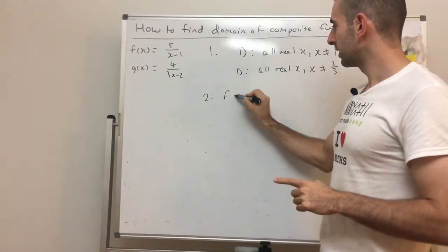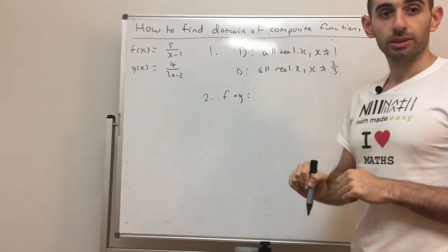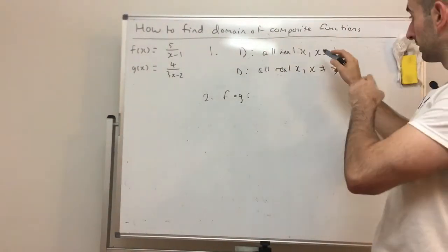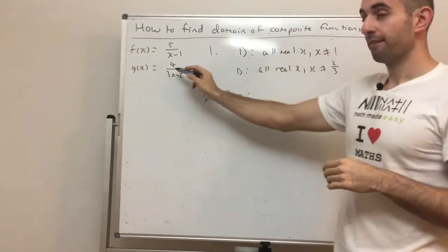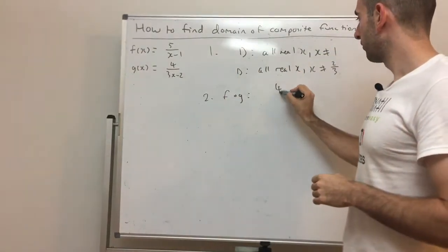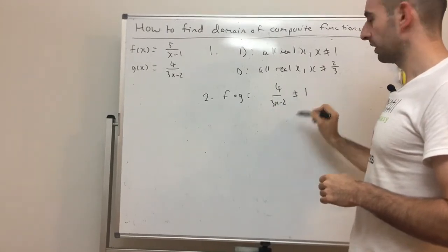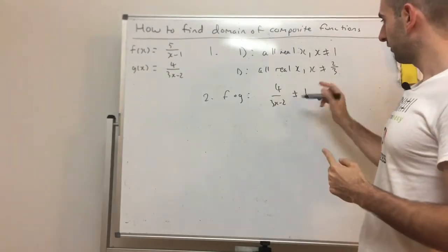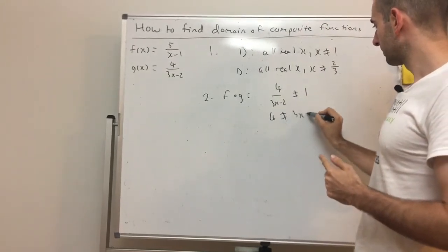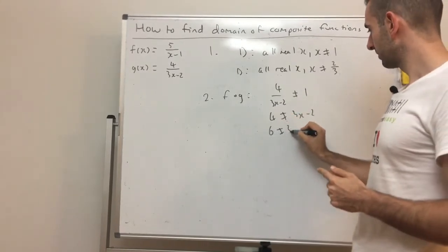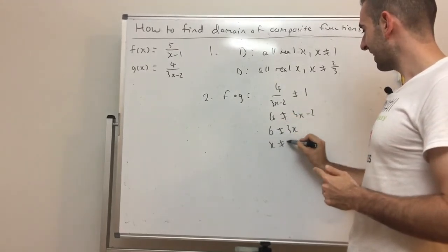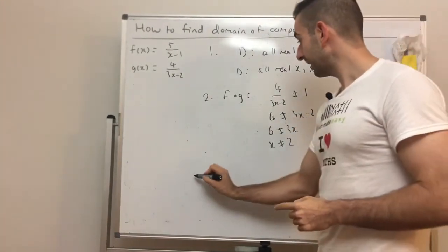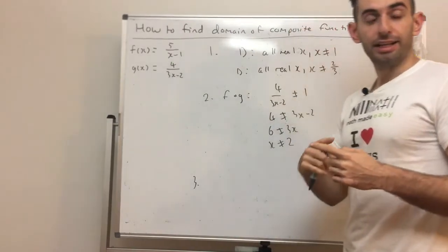Step two: for f∘g, we substitute g(x) into the restriction of f's domain. So instead of x ≠ 1, it becomes 4/(3x−2) ≠ 1. Solving this, we bring the denominator over and find that x cannot equal 2. So x ≠ 2 is a new restriction for the composite.